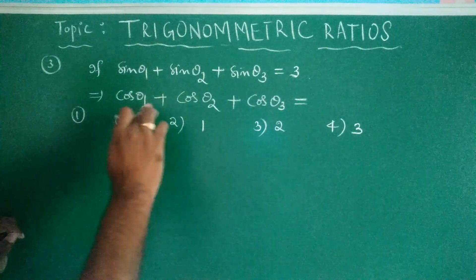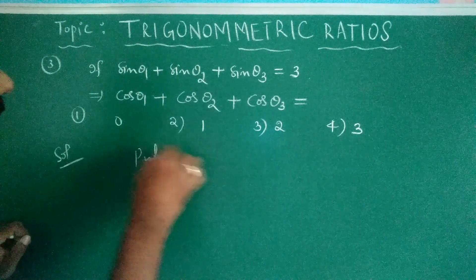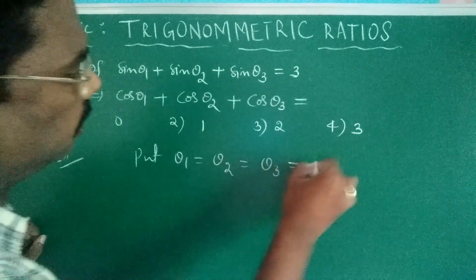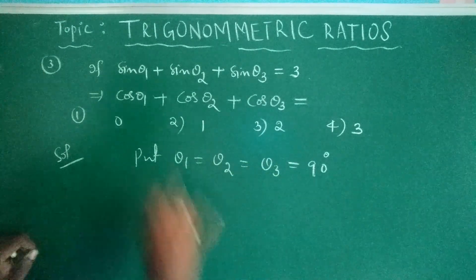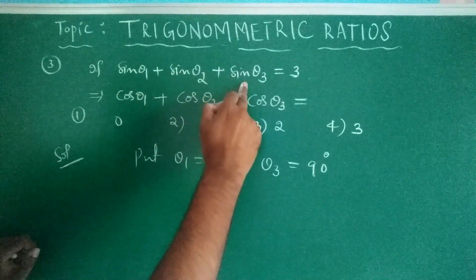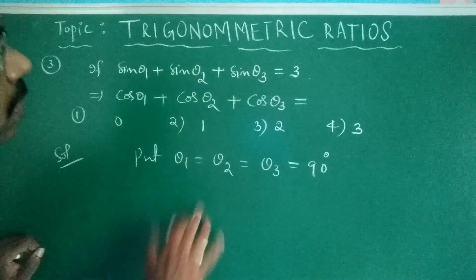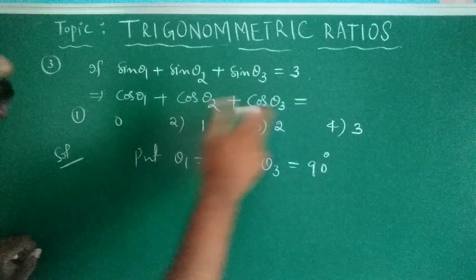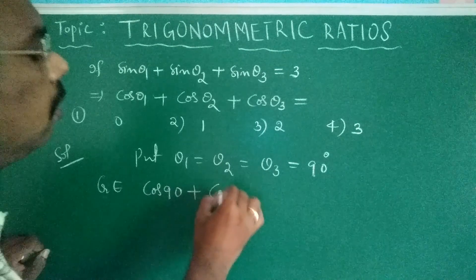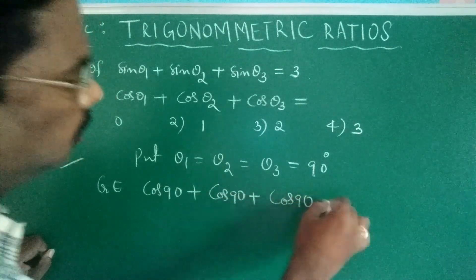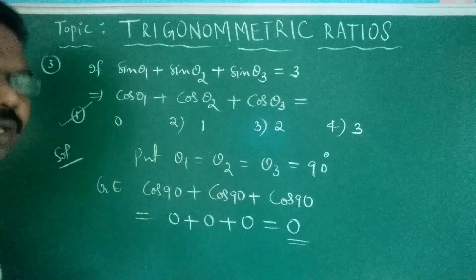Next: find the value of cos θ1 + cos θ2 + cos θ3. Put θ1 = θ2 = θ3 = 90°. Then sin 90° + sin 90° + sin 90° = 1 + 1 + 1 = 3, and 3 = 3, so the condition is satisfied. Now cos 90° + cos 90° + cos 90° = 0 + 0 + 0 = 0. The value is equal to 0. Option 1 is the correct one.